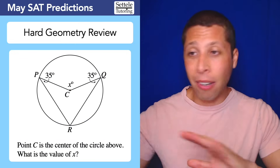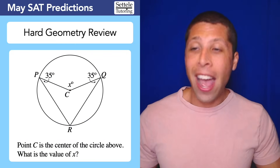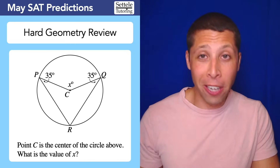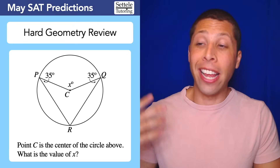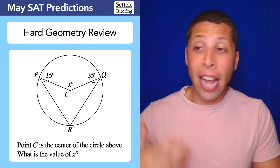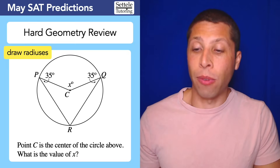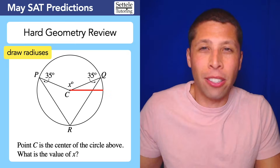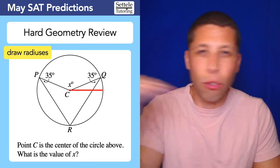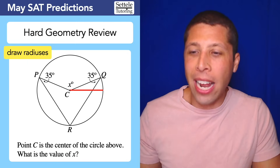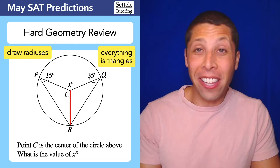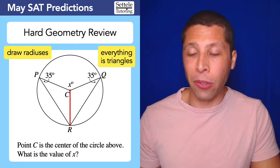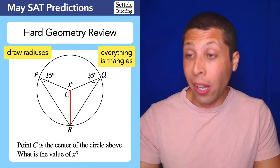Let's look at a sample question — it's not from the practice tests, so it's not spoiling anything. You can pause and work on it now. The first thing I see is a weird shape inside a circle. With a circle, it's probably good to draw radiuses. Don't just draw random horizontal radiuses — make a radius that actually connects the dots and makes sense. When we do that, we get to our other strategy: everything is triangles. We just made two of them.